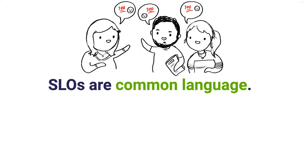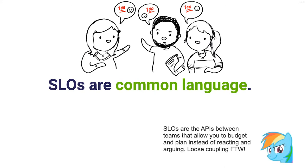SLOs allow you to budget and prepare instead of just reacting and arguing. They also allow teams to collaborate with each other without having to know about the inner workings or decision-making processes. If you're not hitting your SLO, you automatically work on reliability. This means that you don't need to argue with other teams about whether or not they're going to spend time on your priorities, because you've agreed on this.